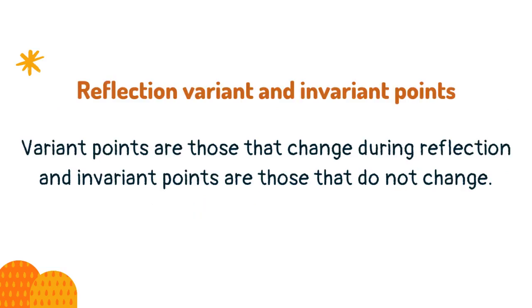Variant points are those that change during reflection, and invariant points are those that do not change. Invariant points are on the mirror line itself.